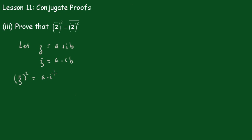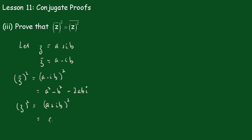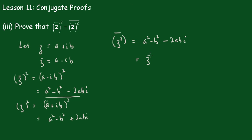That's (A minus iB) all squared, which gives A squared minus B squared minus 2ABI. Now Z squared equals (A plus iB) all squared, which is A squared minus B squared plus 2ABI, so the conjugate of the square is equal to A squared minus B squared minus 2ABI. But this is equal to the square of the conjugate, and thus the conjugate of the square is equal to the square of the conjugate.